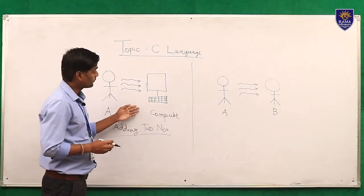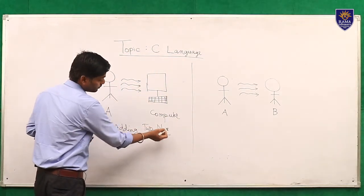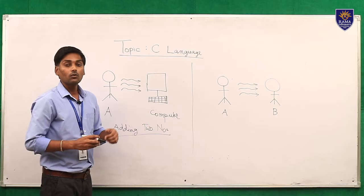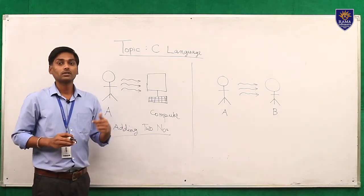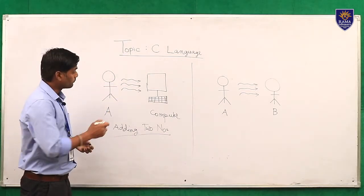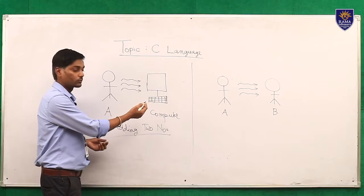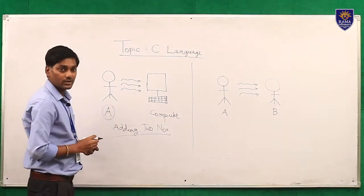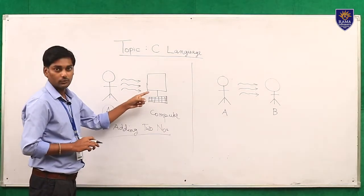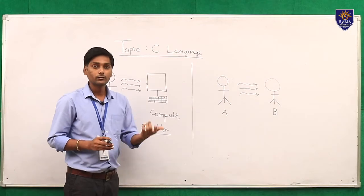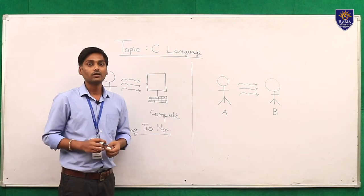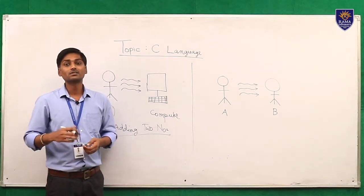But in scenario one, when person A tries to communicate with a computer and assign a task like adding two numbers, we have to be more specific when giving instructions, because computers only execute the exact instructions given by people. This is where C language comes in — it plays a role in communicating with the computer.